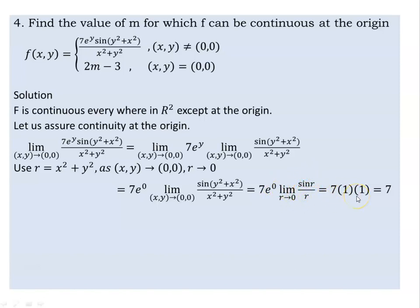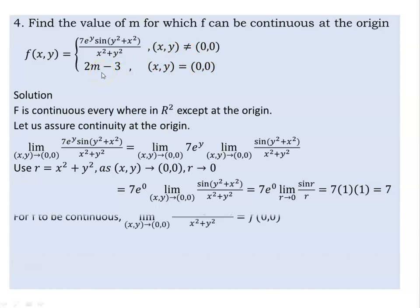If this function is continuous, then the limit equals 7. At (0,0), f equals 2M minus 3. By the continuity definition, we need 7 equal to 2M minus 3, which gives us M equal to 5.